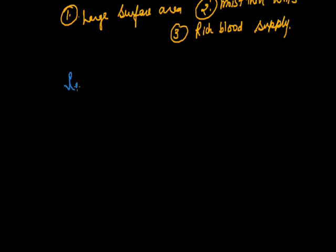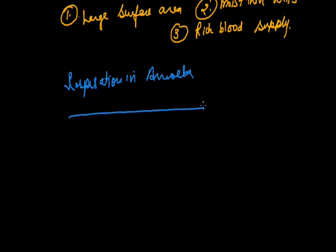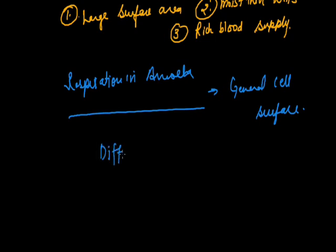Respiration in amoeba occurs with the help of the general cell surface, since amoeba is a unicellular organism. In unicellular organisms like amoeba, and in some lower multicellular organisms like sponges, exchange of gases occurs through the general body surface. These cells are in direct contact with the aquatic environment, so oxygen dissolved in water diffuses into the cell and brings about oxidation of food. This occurs through simple diffusion across the plasma membrane. Carbon dioxide released is expelled out by the same process.